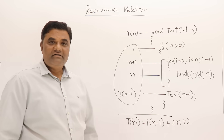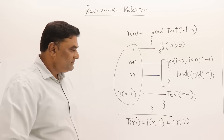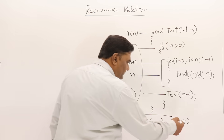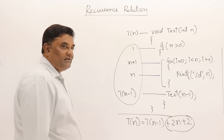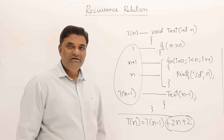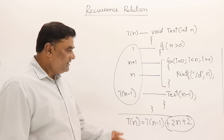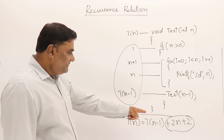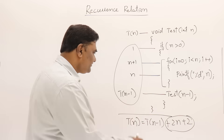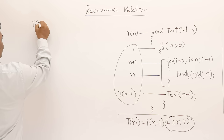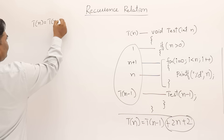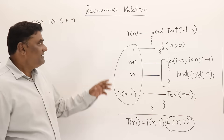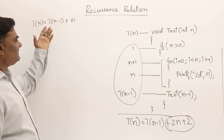This is the recurrence relation I got, but in this form it will not be easy to solve. We have to take the asymptotic notation — we should round it up. Instead of writing 2n + 2, using big O of n or theta of n, since it belongs to the linear class (degree 1), I can frame it as T(n) = T(n-1) + n.